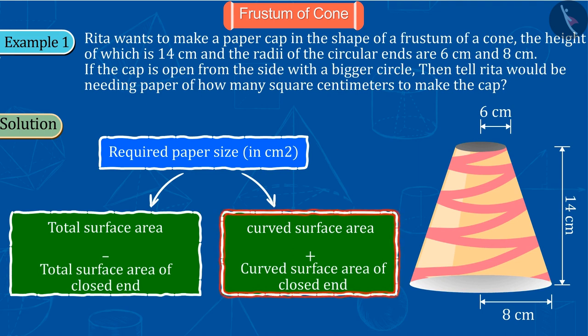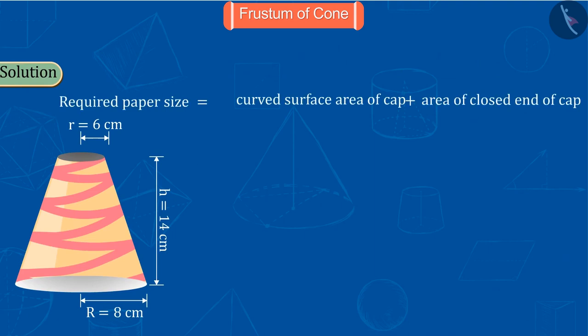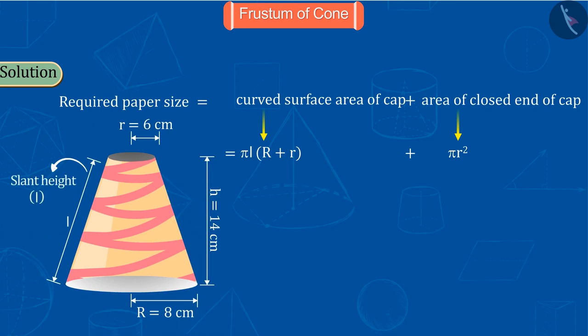The area of the open end will be subtracted from the entire surface area. We will solve this question in the first way and the second way will be left for you to try. Now we mark the given measurements as follows. In the previous video we learned that the curved surface area of the frustum of the cone can be derived from this formula. Since the closed end of the cap is circular, here we will use the formula for the area of the circle. From the formula you can see that to find the curved surface area of the cap we need its slant height, which is not given in the question.